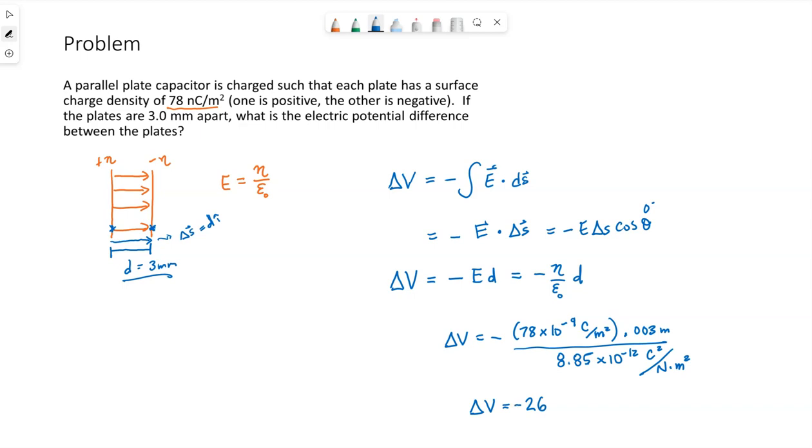Now units: my coulombs will cancel with one of these. These meter squares are going to cancel. My Newton is going to come on top, so I have Newton times meters over coulombs, which is a joule per coulomb, which is a volt.